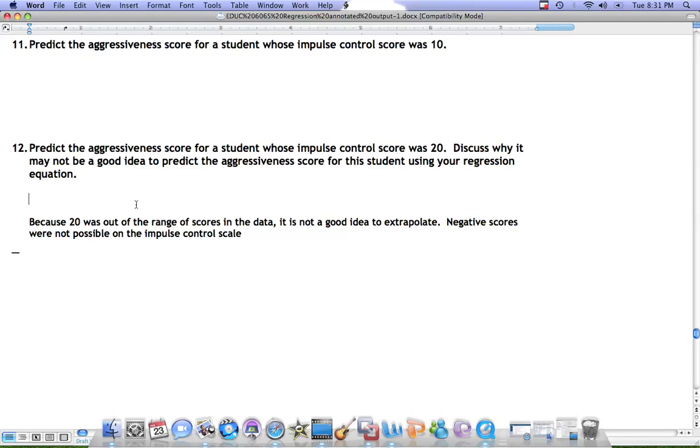In this case, we certainly wouldn't be able to use the score to predict higher values than 20, because that would be outside of the range of the data.